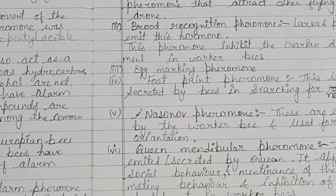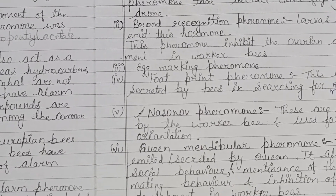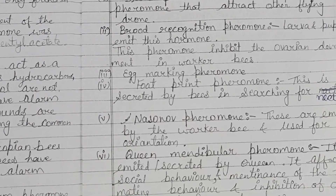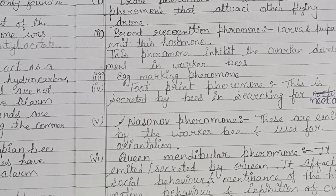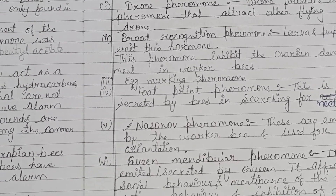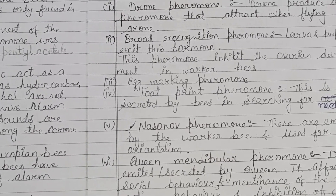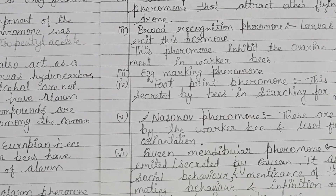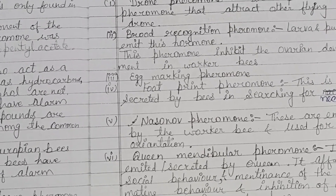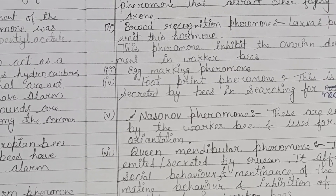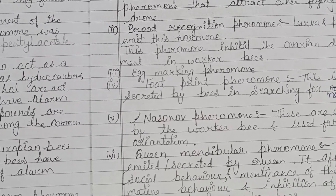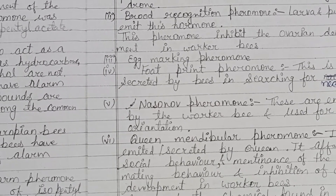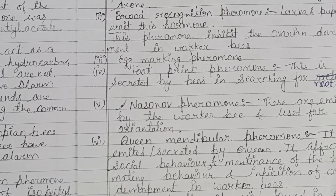Another pheromone is the egg marking pheromone. It helps nurse bees distinguish between eggs laid by the queen bee and eggs laid by a laying worker. Based on this, the amount of nutrition or type of food to be provided by the nurse bee is determined.